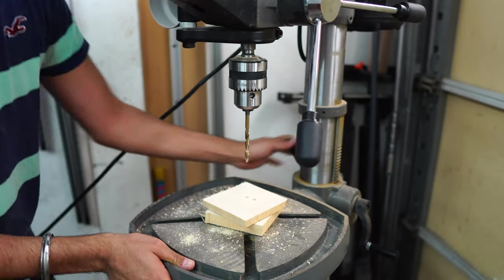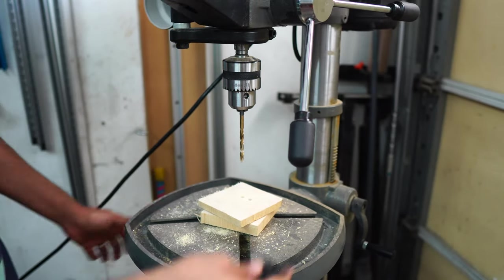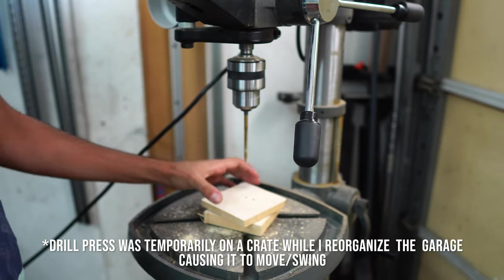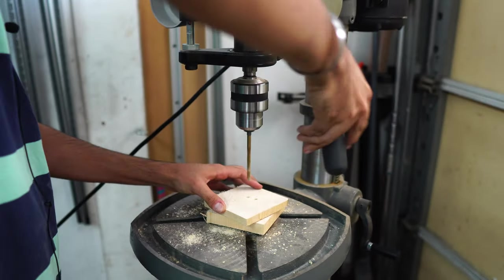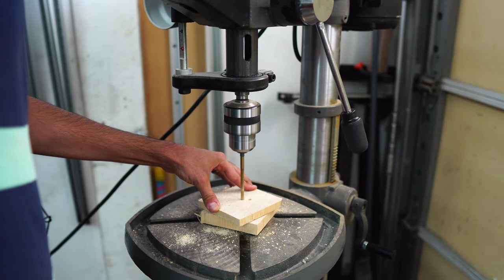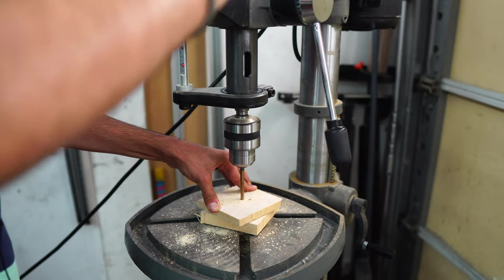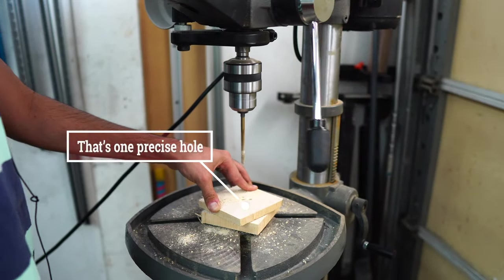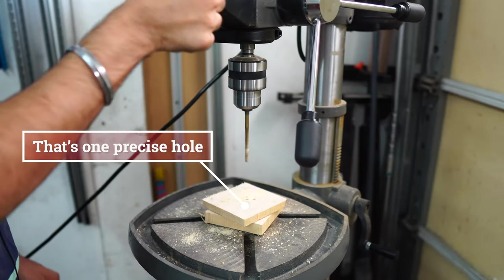Another thing to take note is make sure your table is set. Otherwise, this may swing on you causing you to drill in the wrong place and ruining your project. So my drill was a little wobbly here. That's because we had it in the paint. And that's one precise hole.